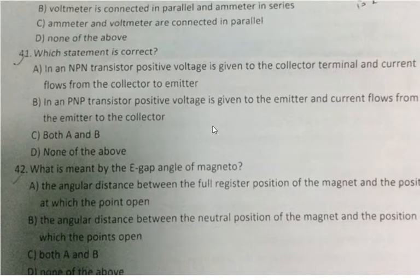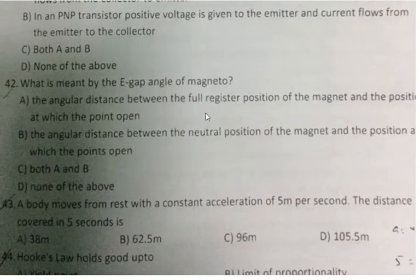Question 41: Which statement is correct? In an NPN transistor, positive voltage is given to the collector terminal and current flows from the collector to emitter. In a PNP transistor, positive voltage is given to the emitter and current flows from emitter to collector. For PNP, positive voltage goes to emitter and current flows from emitter to collector. The correct answer is option C, both A and B.